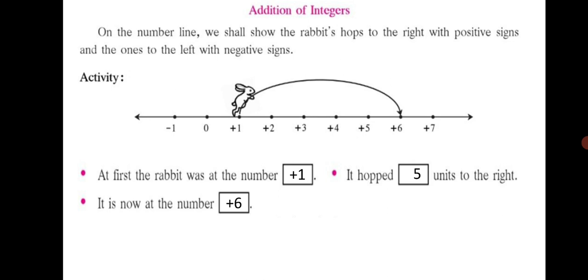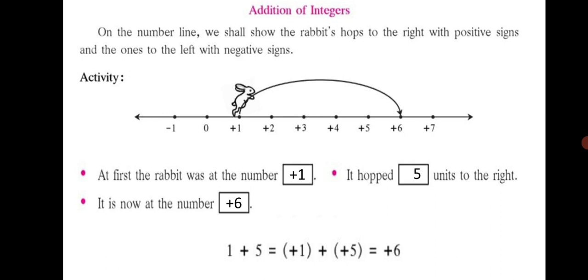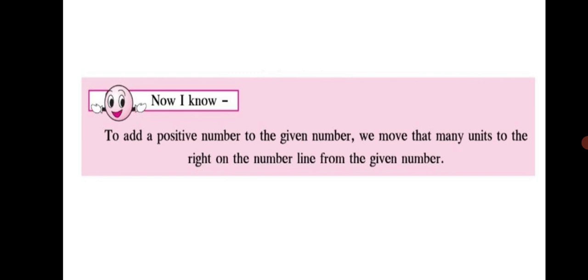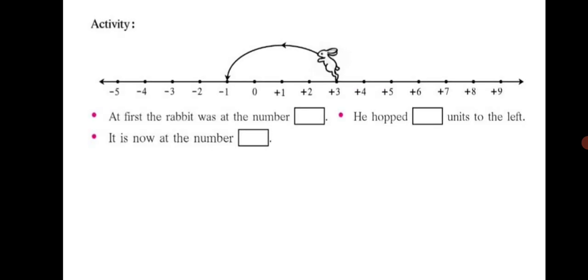This tells us that plus one, and it has hopped five units: one, two, three, four, five — meaning one plus five gives us six. We have proved with the help of the number line that one plus five equals six. So now we know: to add a positive number to a given number, we move that many units to the right on the number line.